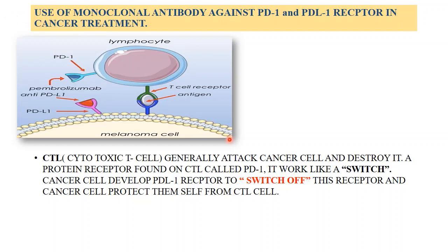We can also develop monoclonal antibodies against PD-1 and PD-L1 receptor proteins, which are generally used in cancer treatment. The myeloma cancer cell is detected by the cytotoxic T-cell, which normally comes and binds with the myeloma cell to destroy it. However, sometimes the myeloma cell produces a PD-L1 receptor, and the lymphocyte contains a PD-1 receptor. This PD-1 receptor works like a switch — if switched off, the cytotoxic T-cell never works against the cancer cell and becomes inactivated. The myeloma cell's PD-L1 receptor binds with the PD-1 receptor and inactivates the cytotoxic T-cell, allowing the myeloma cell to easily grow.